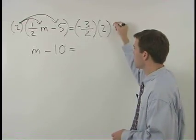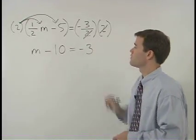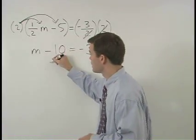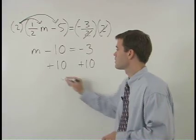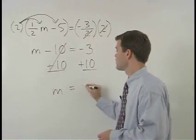On the right side, our 2's cancel and we're left with negative 3. Now to get m by itself, we just add 10 to both sides of the equation and m equals 7.